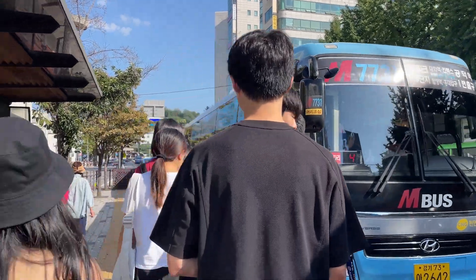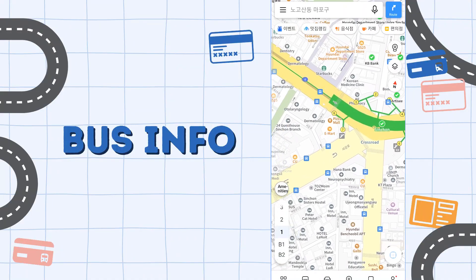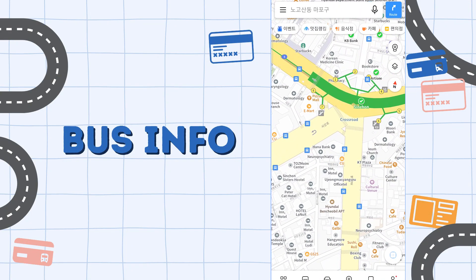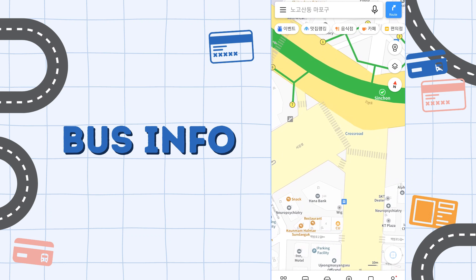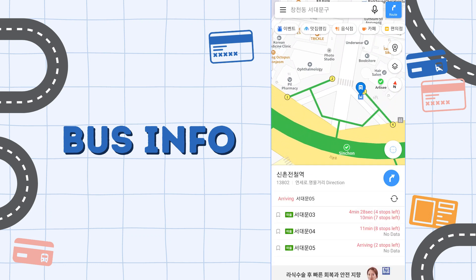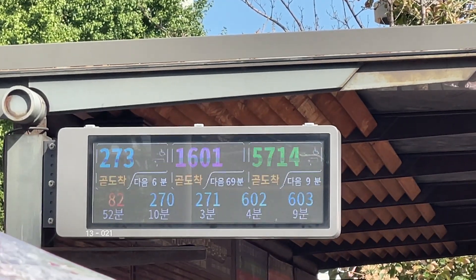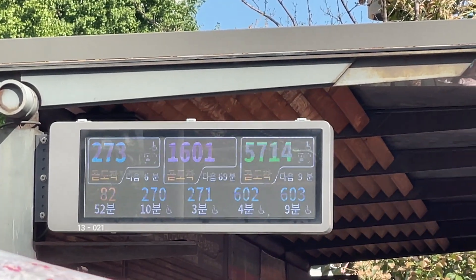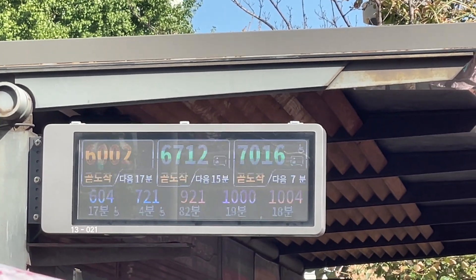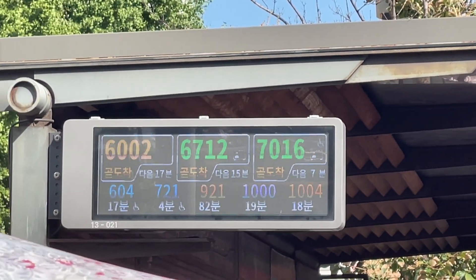The same goes for buses. Using the map applications, you will be able to check which bus lines you must take and which bus stop to transfer at. Furthermore, as mentioned earlier, each bus stop has its own five-digit code. You can check the code by clicking on the bus stop in the map application, or find it at the bus stop itself — either on the wall or the stand with the bus information.